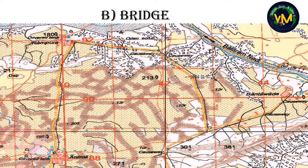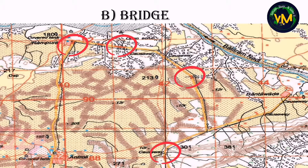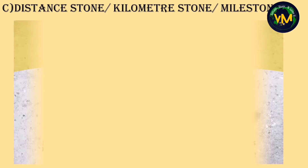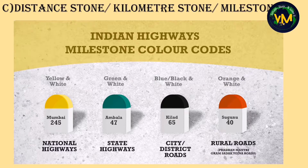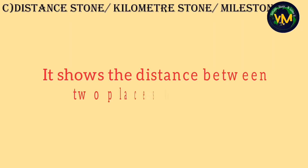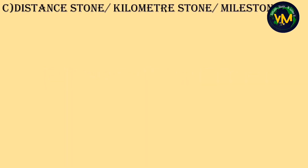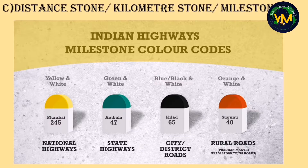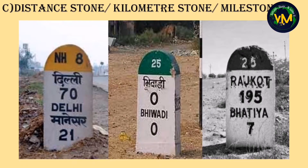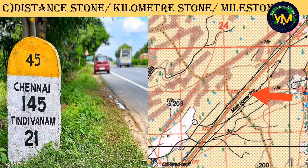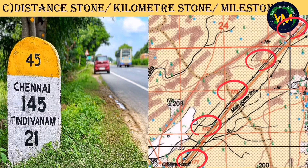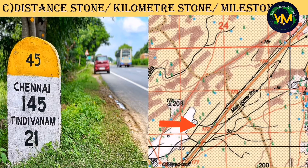This is called a distance stone, kilometer stone or milestone. It shows you the distance between two places in kilometers, and these stones have different colors based on which highway they are located on. In our topographical map you can see the numbers in red color along the state highway — starting from the bottom: 171, 172, 173, 174 and 175. So these are called distance stones.